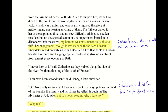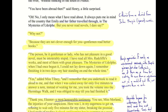Catherine says, 'I never look at it without thinking of the south of France.' Henry, a little surprised, asks if she has been abroad. He's surprised because a young woman of fifteen or sixteen would probably not have had much opportunity to travel yet. Catherine explains: 'No, I only mean what I've read about. It always puts me in mind of the country that Emily and her father traveled through in The Mysteries of Udolpho.' Once again, Catherine's perceptual framework comes from what she has read.